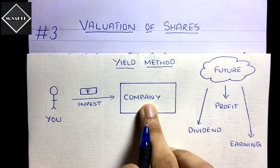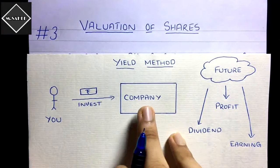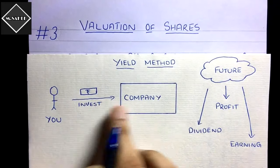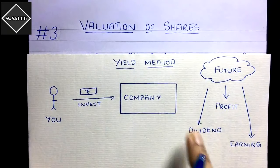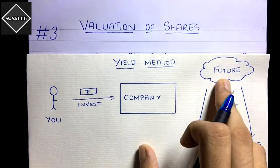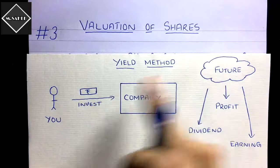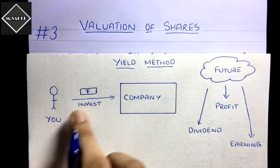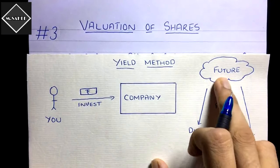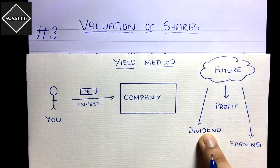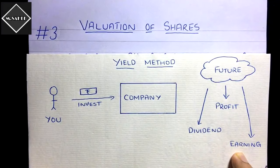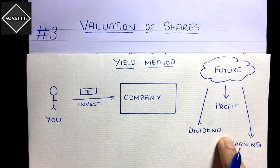Here we are talking about valuation of shares of a company. What the company does is think about what people will consider before investing. People will think: what profit will this company earn, what dividend will it issue, what earnings will it have? Everyone thinks about the future return — what they will get if they put their hard-earned money in this company. This method is based on future assumption: the company will continue for a good number of years and will issue good dividends and have good profits.